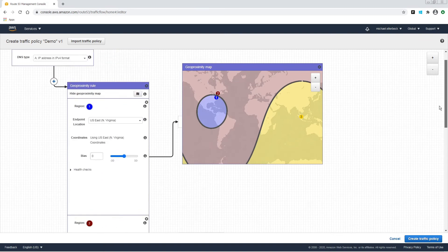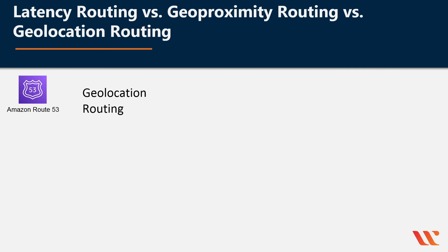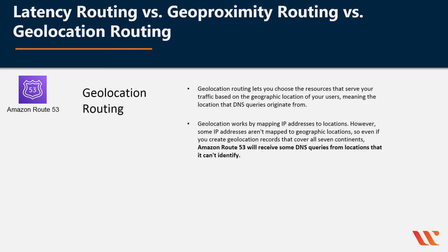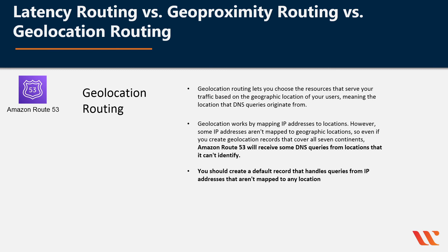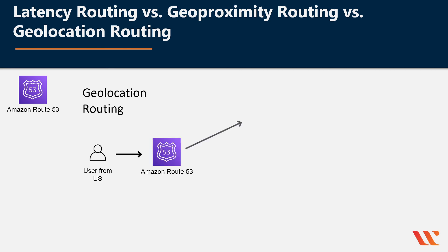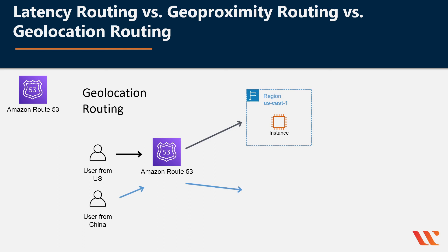And finally, let's talk about geolocation routing. Geolocation routing lets you choose the resources that serve your traffic based on the geographic location of your users — meaning the location that DNS queries originate from. Geolocation works by mapping IP addresses to locations. However, some IP addresses aren't mapped to geographic locations, so even if you create geolocation records that cover all seven continents, Route 53 will receive some DNS queries from locations it can't identify. That means you should create a default record that handles queries from IP addresses not mapped to any location. For example, a user from the U.S. hits a mapping that sends it to us-east-1, and a user from China hits a mapping that goes to ap-east-1.